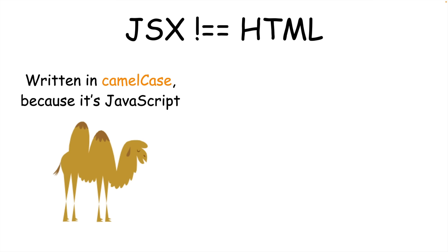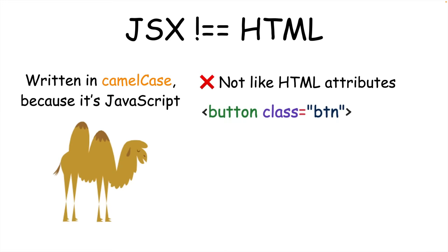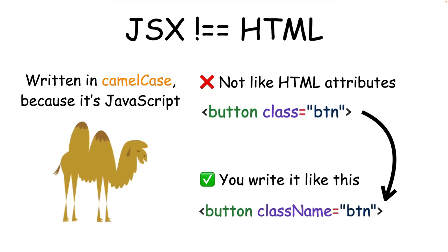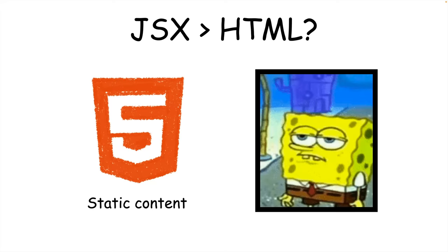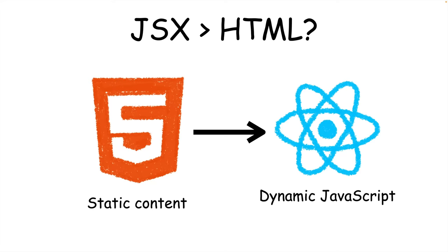Since JSX is JavaScript, you can't write attributes like you would in HTML. You have to write them in the camelCase style. That means HTML attributes like class become className. Unlike HTML, which is static and unchanging, the benefit of using React is that you can use dynamic JavaScript values in your JSX.